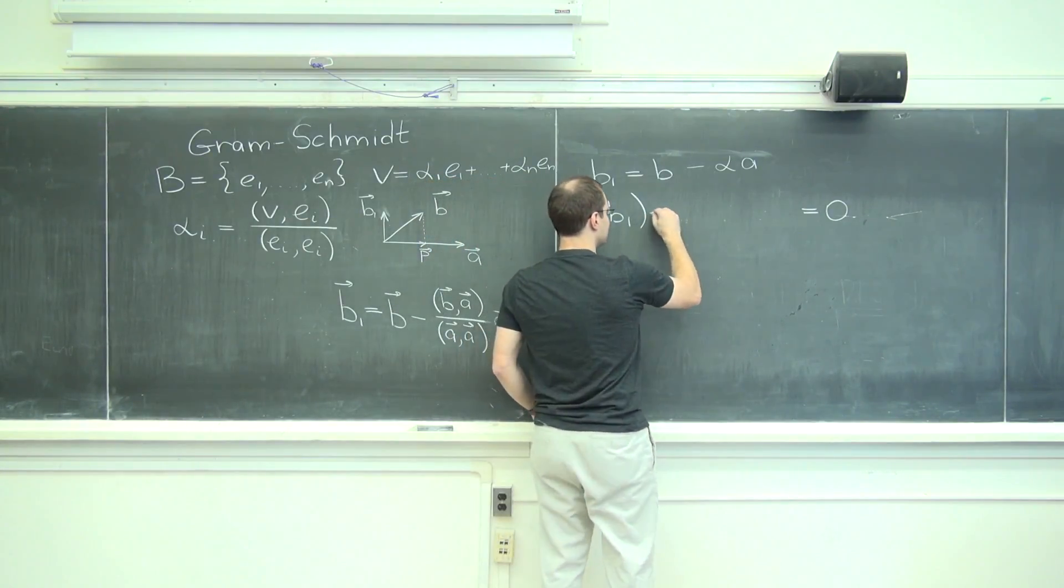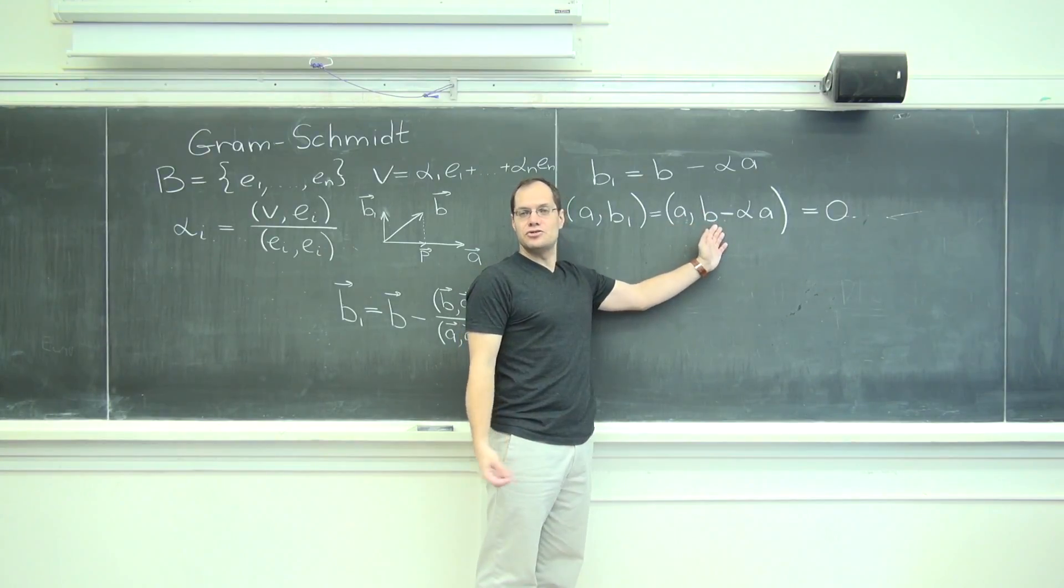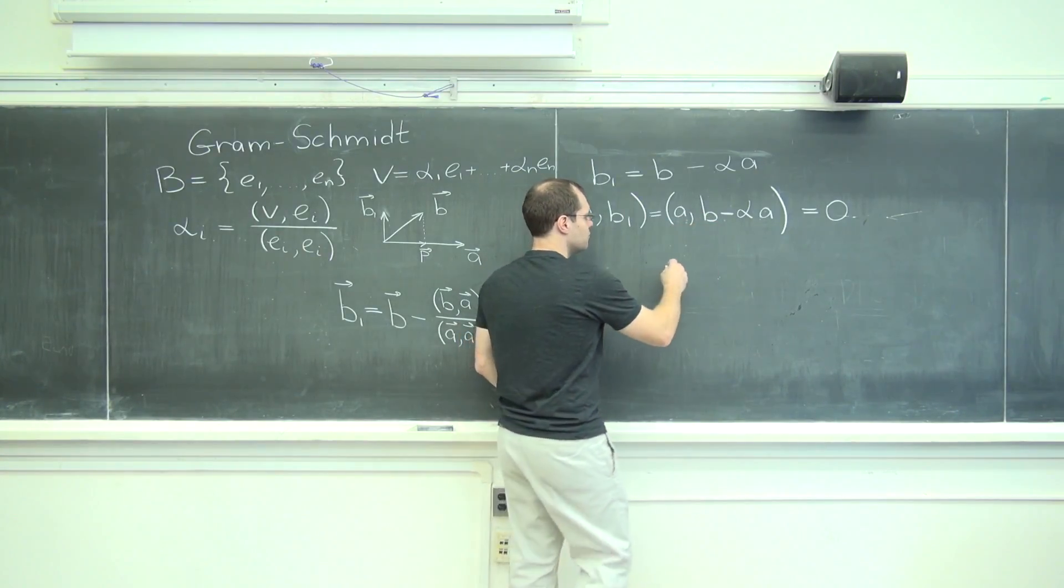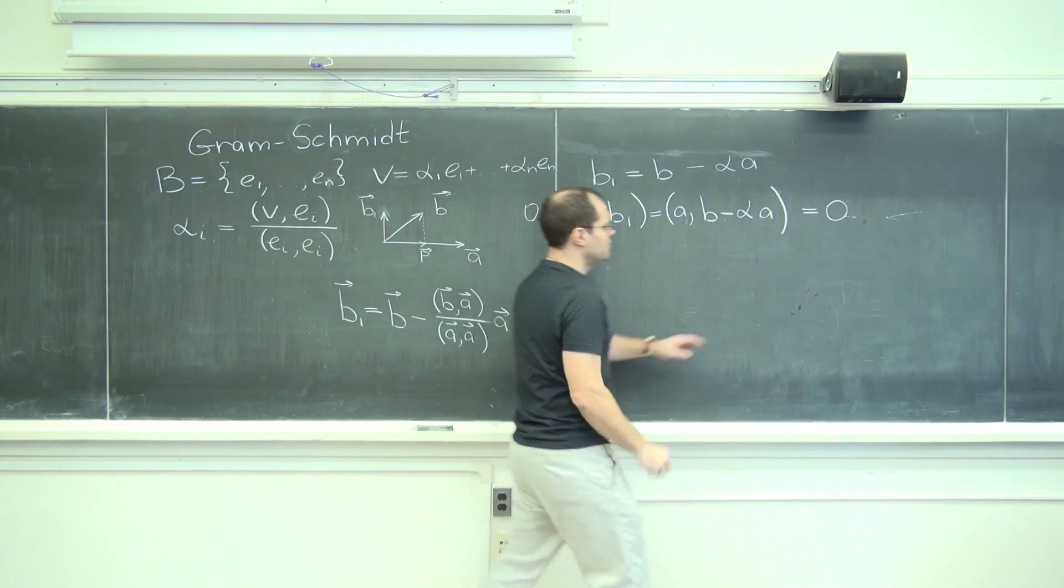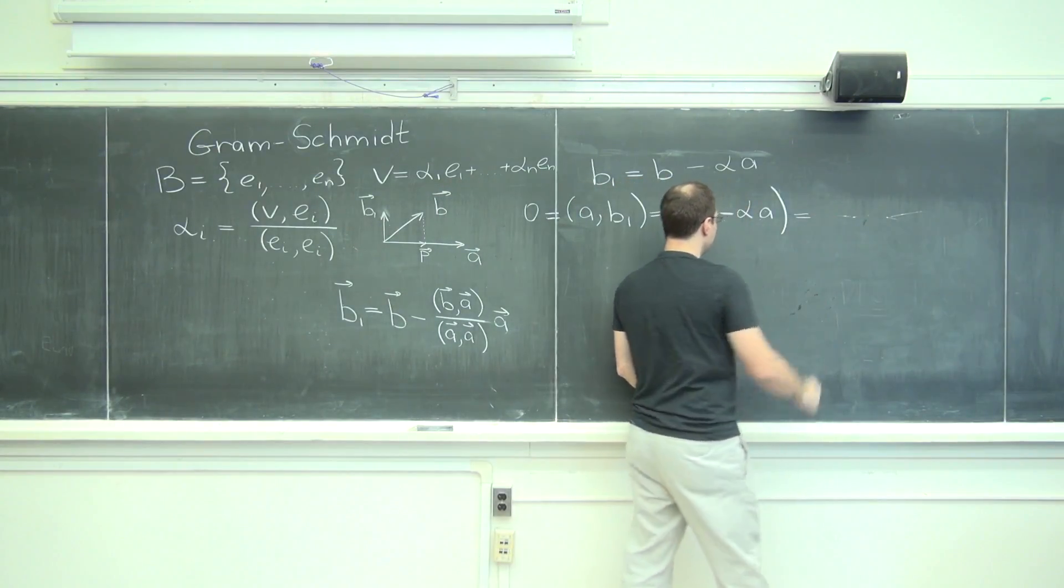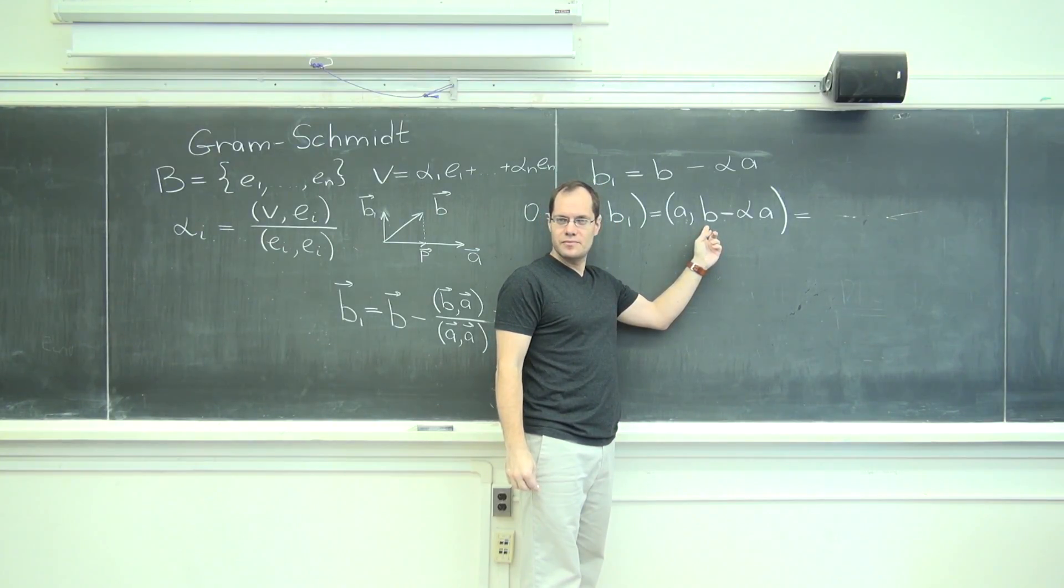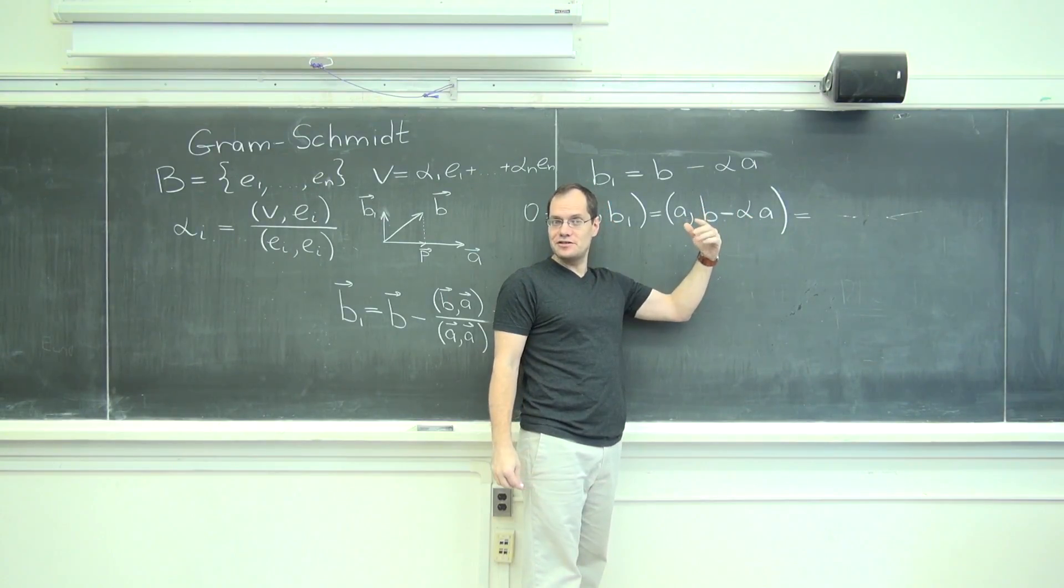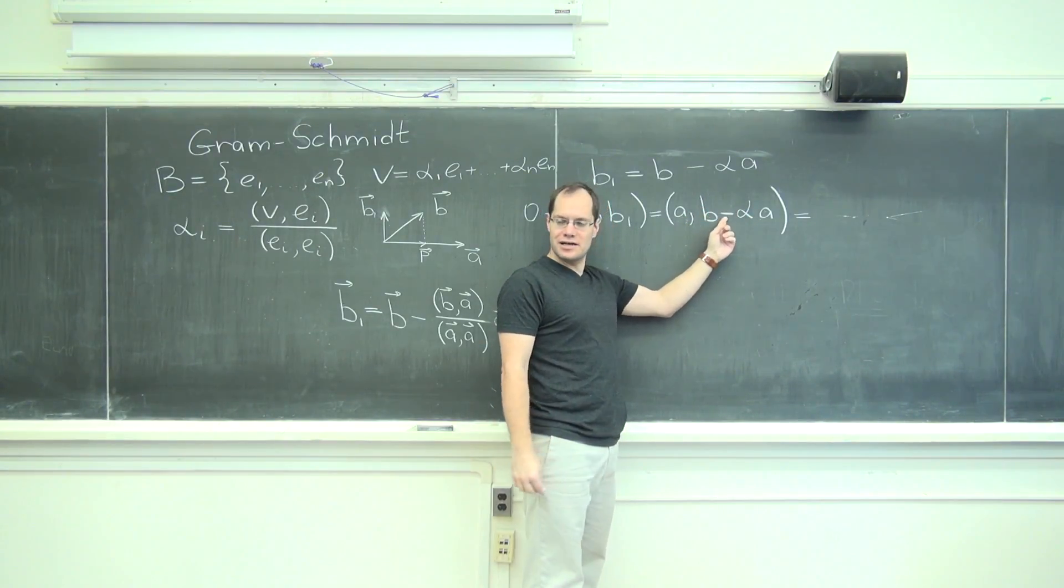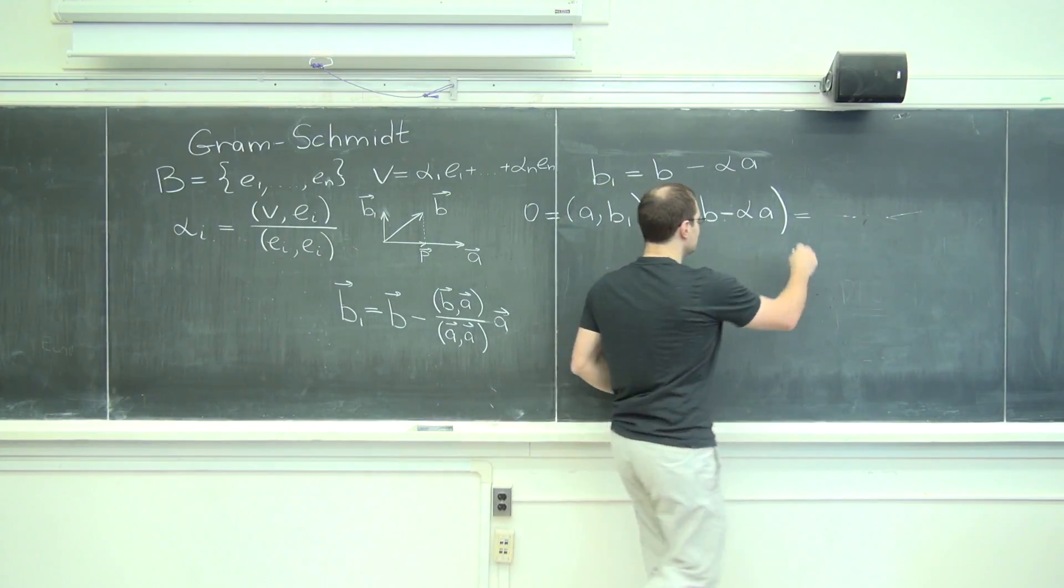Well, let's plug it in. As you know, the inner product is distributive. Maybe I should have written zero equals. We have a dot b, do you agree with me? Minus alpha a dot a. I'm using distributivity twice, one to break up this minus sign and one to take alpha out.